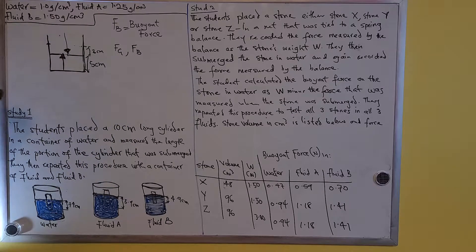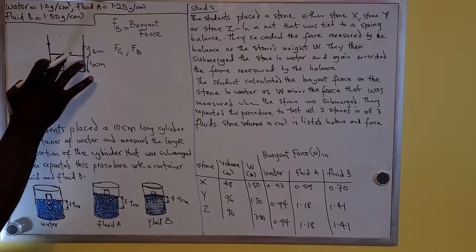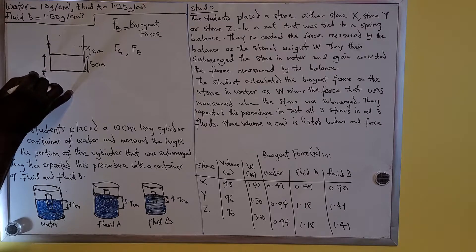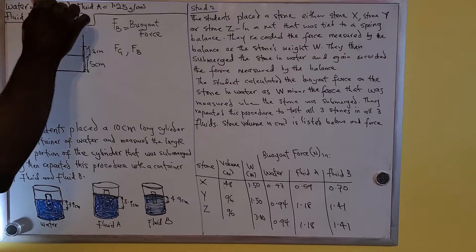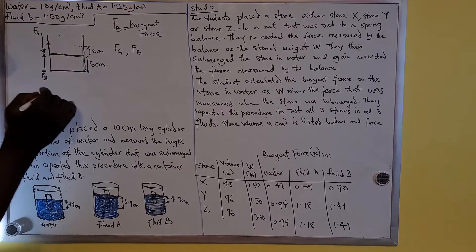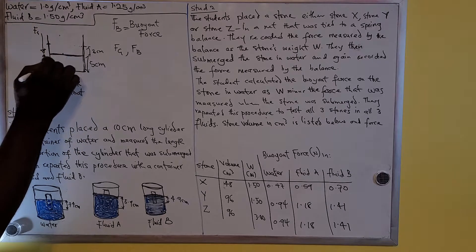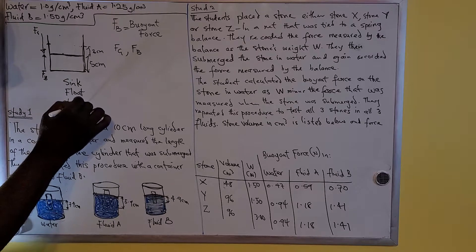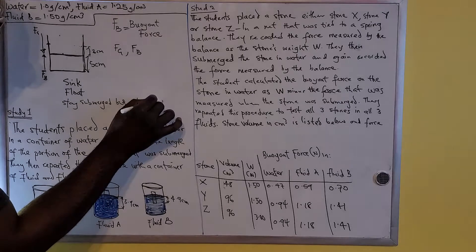If you put something in water, three things can happen. That thing can either sink, float, or stay submerged in the middle of the water but not sink completely. The force going upward is FB and the force coming down is FG. If you put something in water, there will be a surface tension and one of these three outcomes will occur.